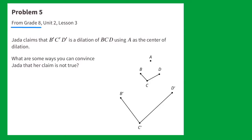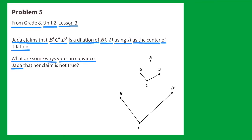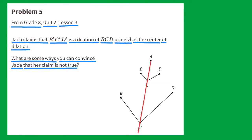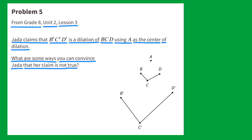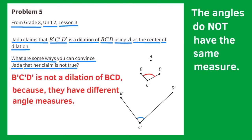Problem number 5. From 8th grade Unit 2 Lesson 3: Jada claims that B'C'D' is a dilation of BCD using A as the center of dilation. What are some ways you can convince Jada that her claim is not true? First I'll check if A, C, and C' are collinear — they are. And A, B, and B' are collinear — they are. And A, D, and D' are also collinear. So far so good for Jada. Let's compare angles: angle BCD looks to be wider than angle B'C'D'. The angles do not have the same measure. B'C'D' is not a dilation of BCD because they have different angle measures. Also, line segment CD and C'D' are not parallel — and because of these reasons, B'C'D' cannot be a dilation of BCD.